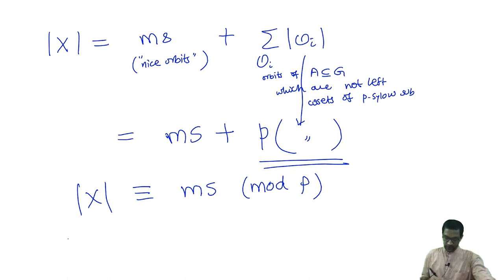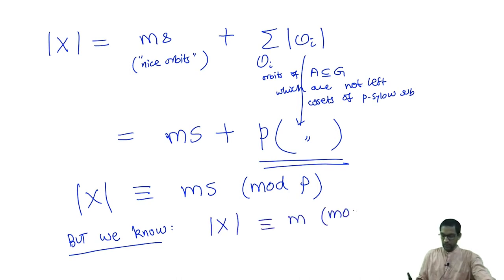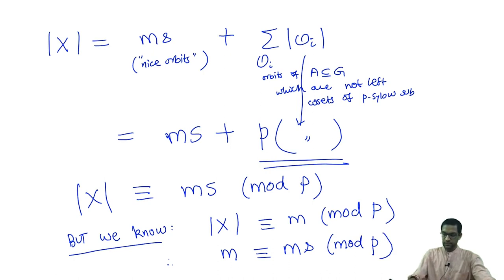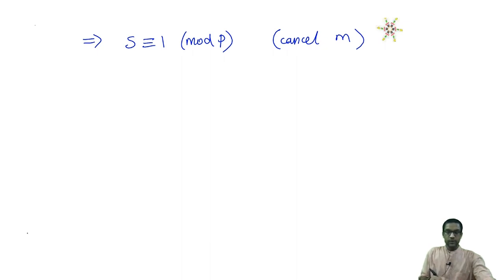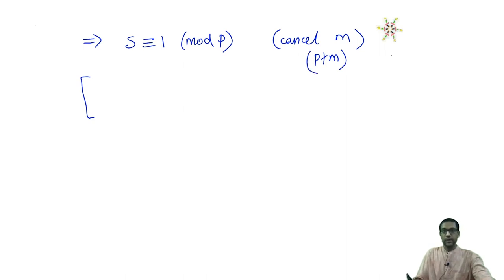We conclude that m·s ≡ m (mod P), where s is the number of Sylow subgroups. Cancelling m from both sides — valid because m is not divisible by P — we get s ≡ 1 (mod P). That is the end of the proof. A little aside on the cancellation: since ms ≡ m (mod P), we have P divides m(s−1). Since P does not divide m, P must divide s−1, meaning s ≡ 1 (mod P).